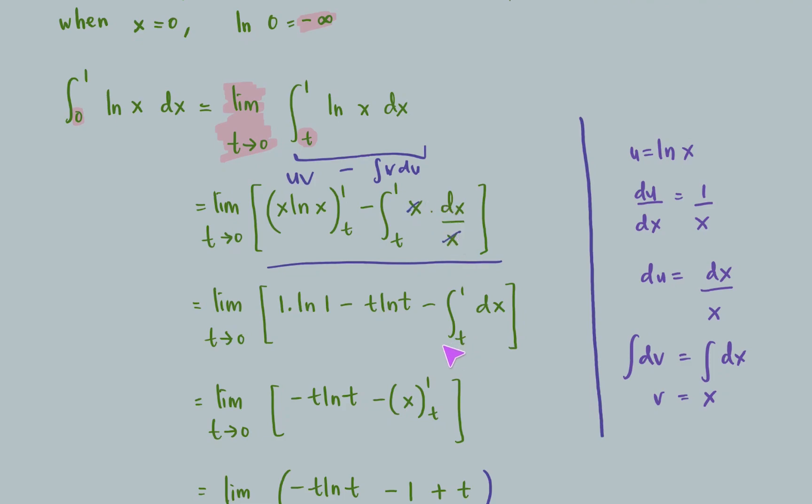Simplify and we will come to this part. For x ln x, u times v, we need to substitute the value from t to 1, because this is a definite integral. So we need to substitute the value of the boundary.